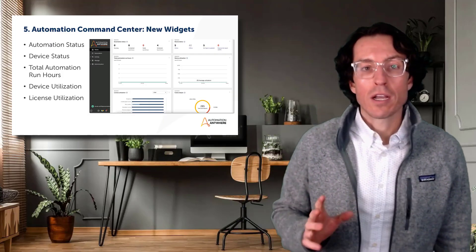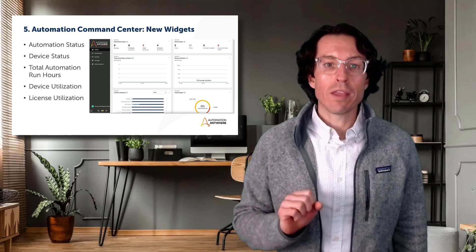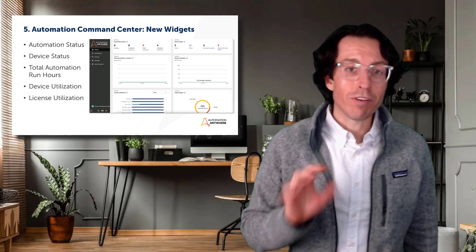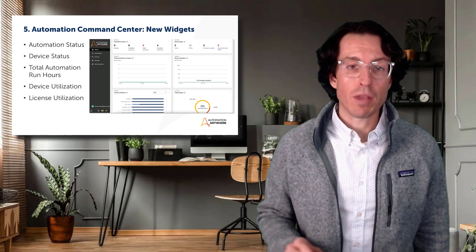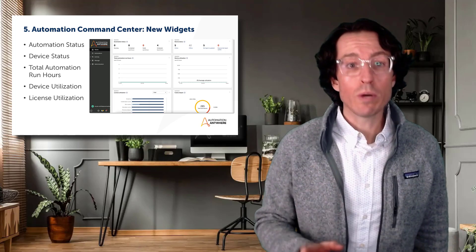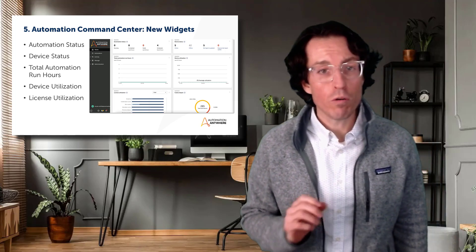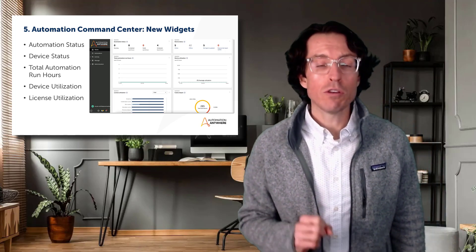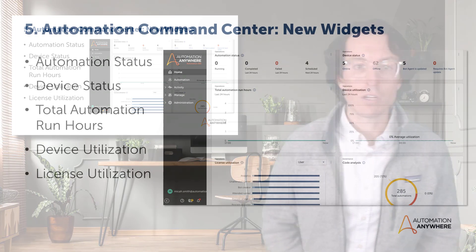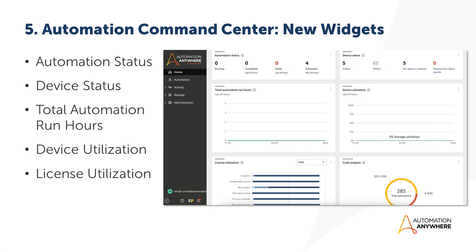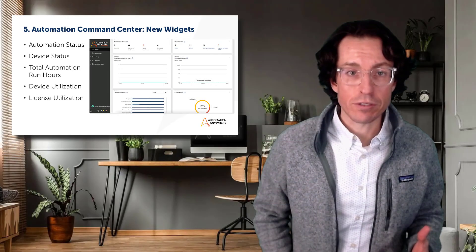Coming in at number five is one that is for both developers and Automation Leaders, and it's the new widgets that show up on your homepage. When you log into your Automation Anywhere control room, this space is being introduced as the Automation Command Center, and it's basically a quick-view dashboard into your automation operations.